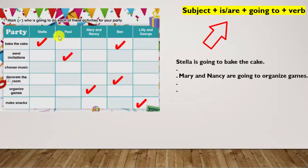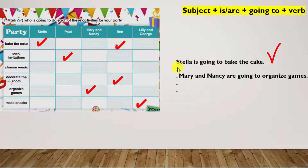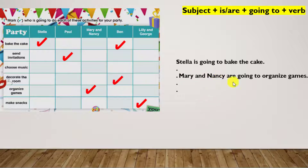Entonces, por ejemplo, agarramos Stella. Stella is going to bake the cake. He seguido la fórmula: Stella es el sujeto, como está en singular pongo is, luego going to, y el verbo: bake the cake con todo su complemento. ¿Qué pasa si agarramos Mary and Nancy? Aquí hay plural, entonces: Mary and Nancy are going to organize games. Como son plural, voy a usar are, luego going to, y el verbo: organize games. This is a variation — singular uses is, plural uses are.